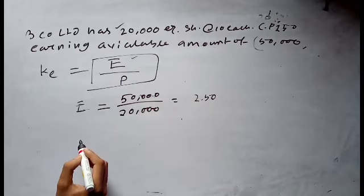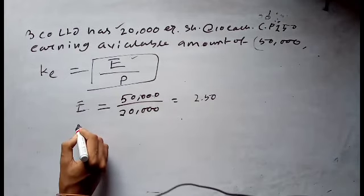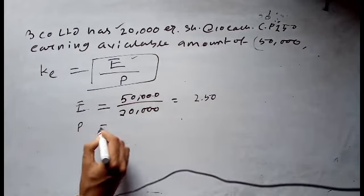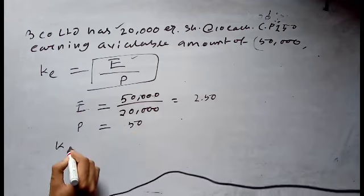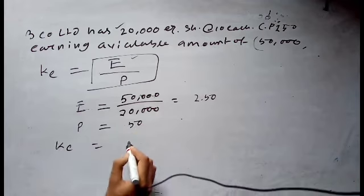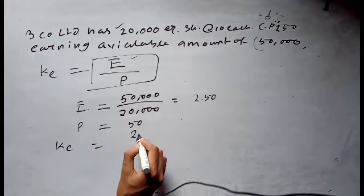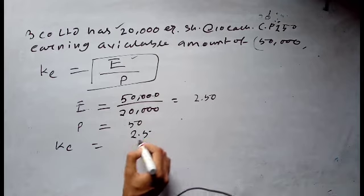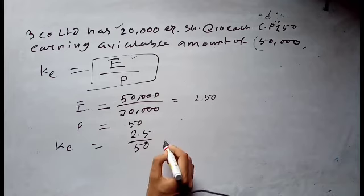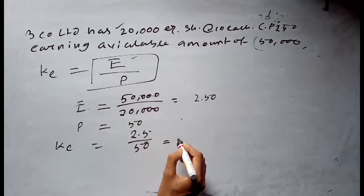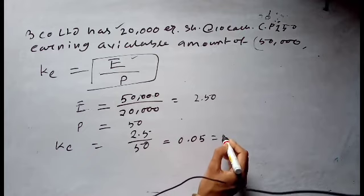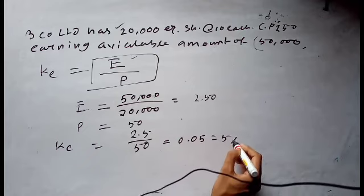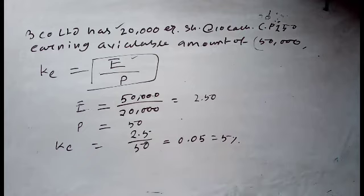The current market price P is ₹50 per share. Therefore, ke = 2.5 / 50 = 0.05, which is 5 percent.